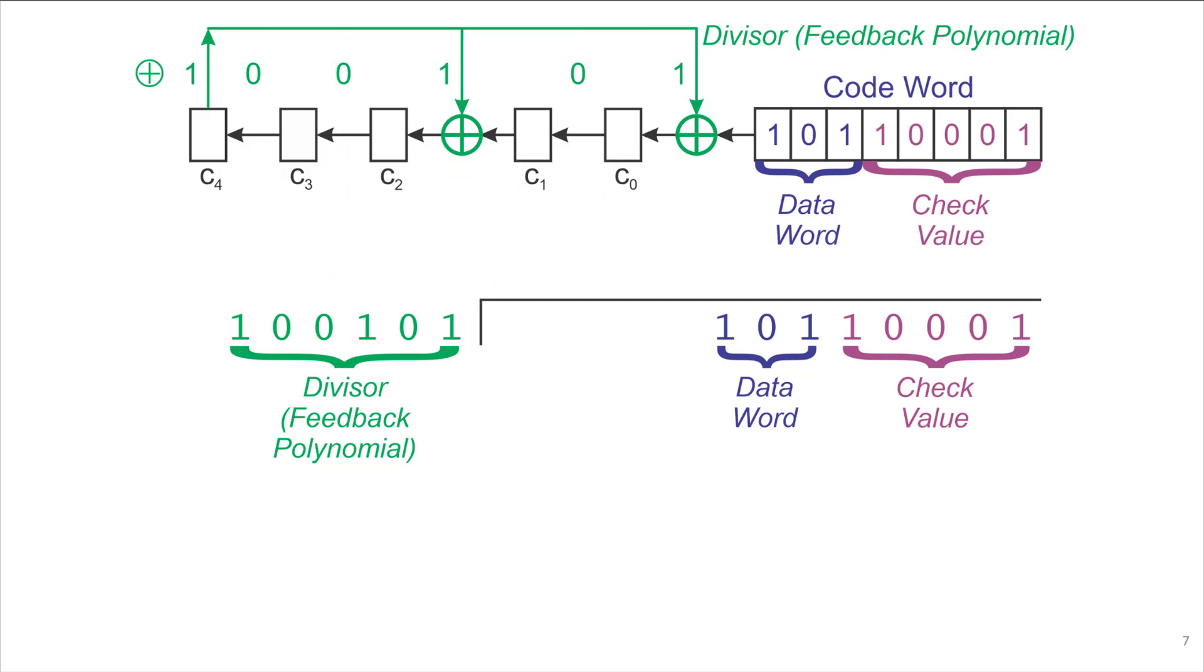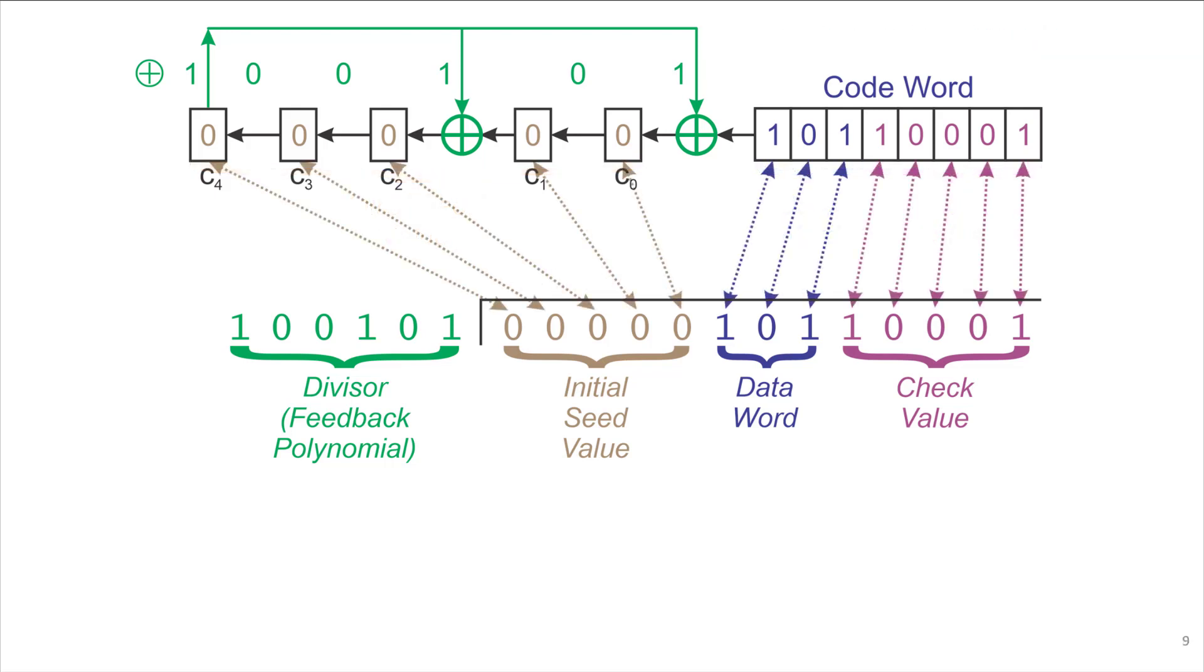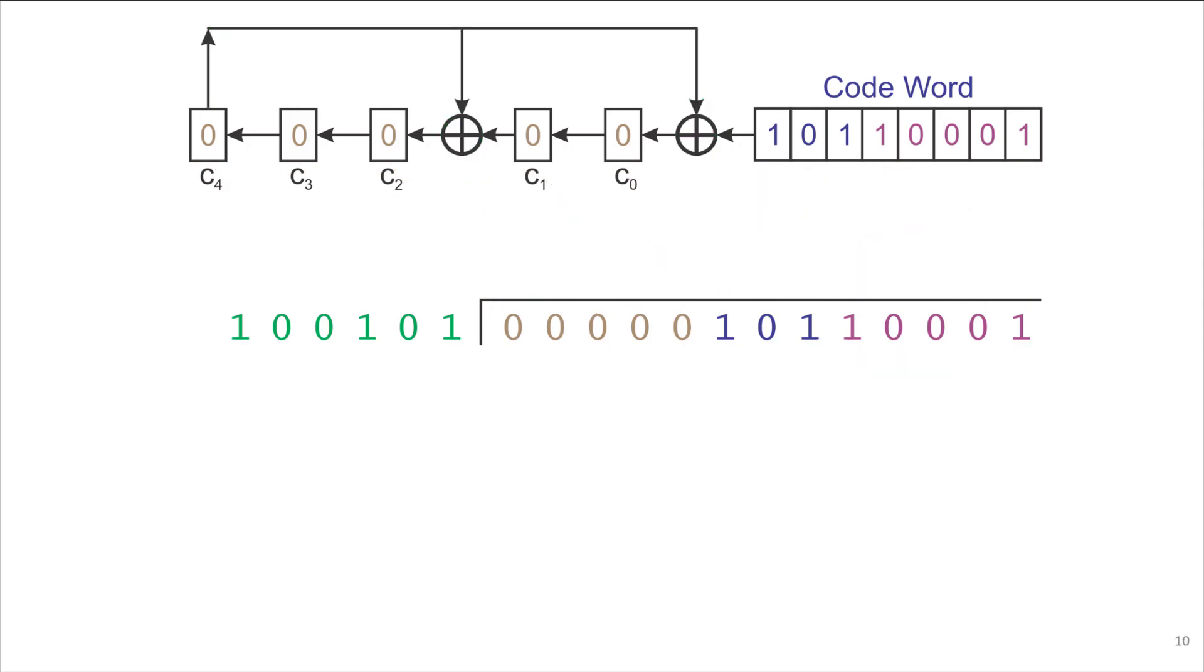Before we can start, we need to initialize the feedback shift register with some initial values, which will be all 0 in this case. But in fact, it can be any value that's an initial seed value. To make sure that the long division algorithm comes to the same answer the same way, we also use an initial seed value there. And it turns out this has to be prepended to the rest of the codeword for the long division algorithm to work out properly. Just for emphasis, we can see that all the bits of the seed value and the codeword are counted for in both diagrams.